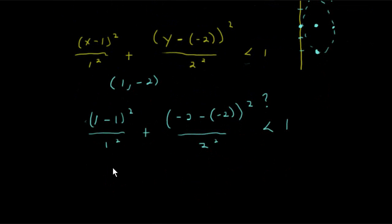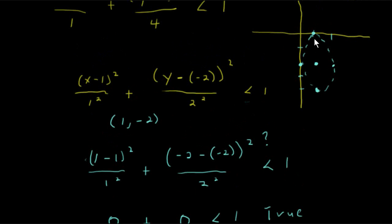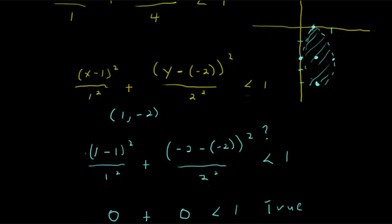And we see here that 1 - 1, that's 0. That whole first term is just going to simplify down to 0. Same thing with the second term. -2 - (-2), that's -2 + 2. That's going to be 0. And so we do get a true statement, which means we want to shade on the inside of this.